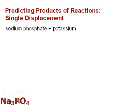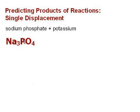Okay, let's write our reactants. Sodium is a plus one charge, phosphate's a minus three, so we get Na3PO4 plus K for potassium. Now the Na and the K are going to flip-flop places—that's what's getting displaced.